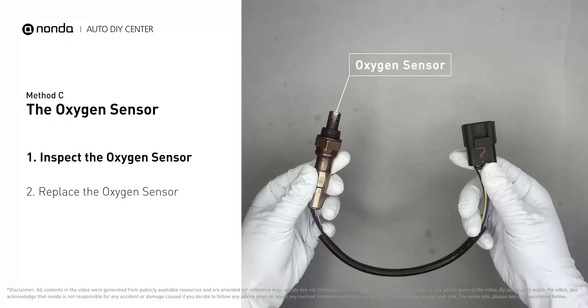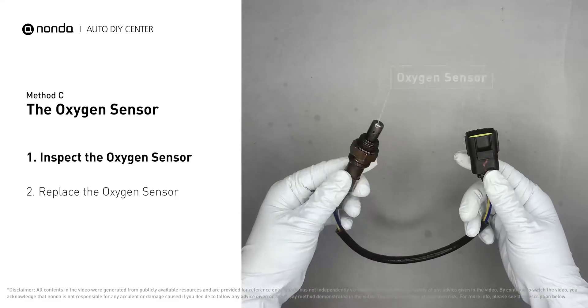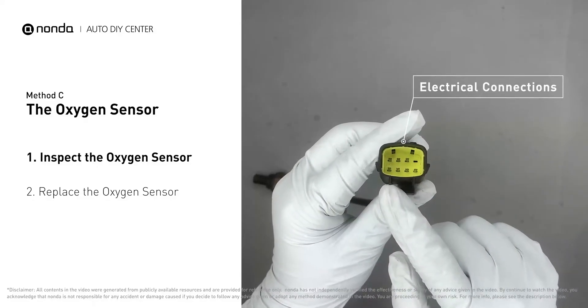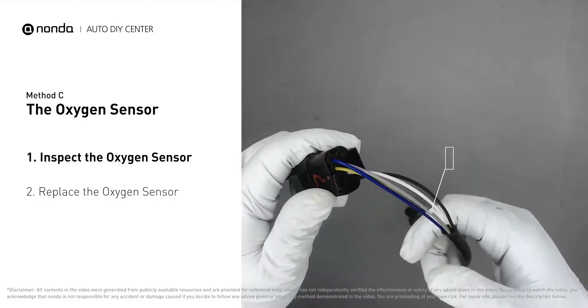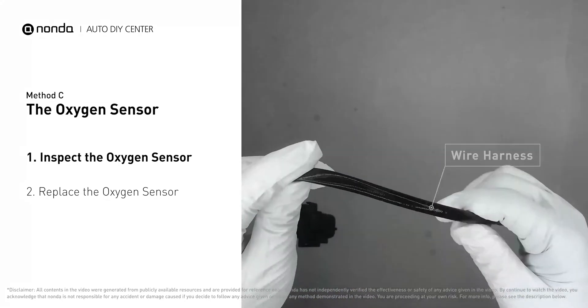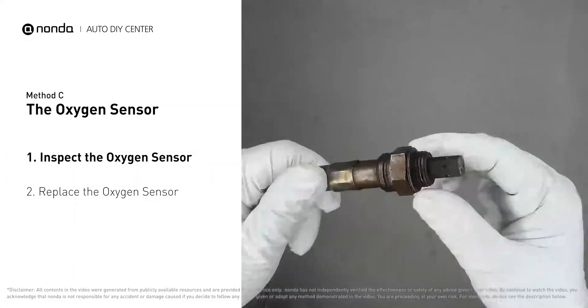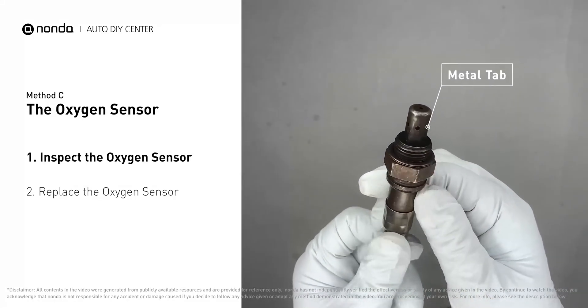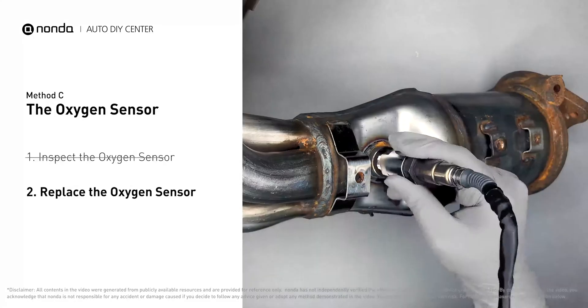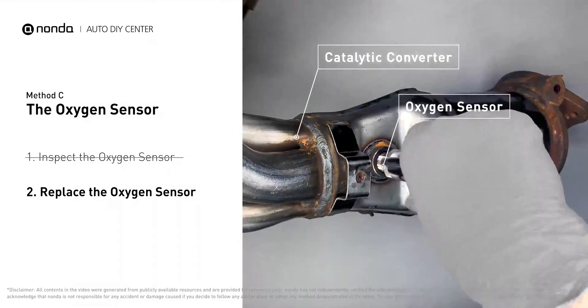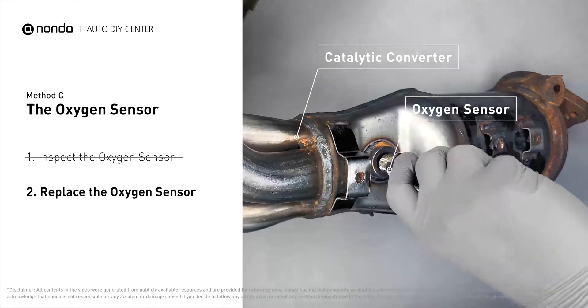Visually check the oxygen sensor's electrical connections, wire harness, and metal tabs for any damages. If damages are found, replace the oxygen sensor.